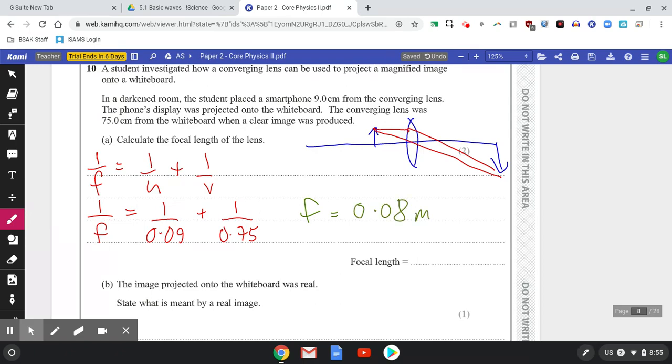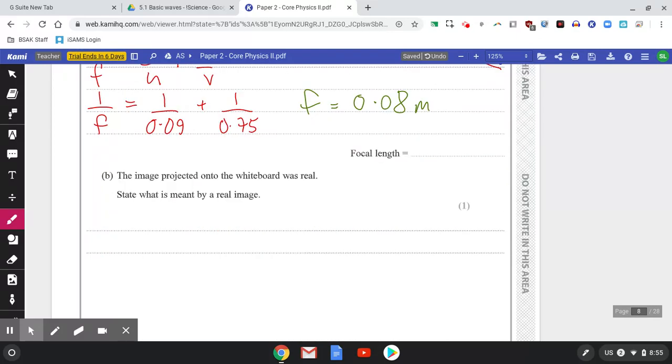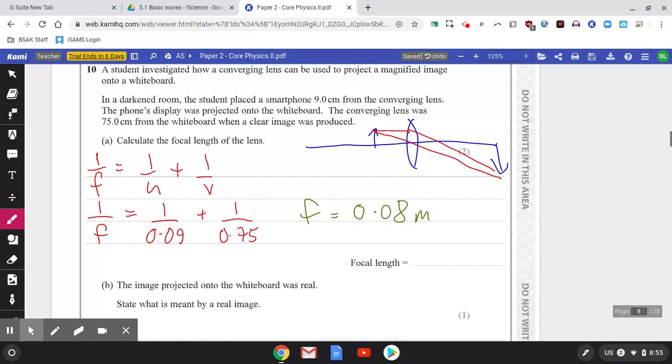The image projected onto the whiteboard was real. Okay, well we figured that out for ourselves. State what's meant by real image. Right, you can't say real images are ones you see on a screen because it tells you that.